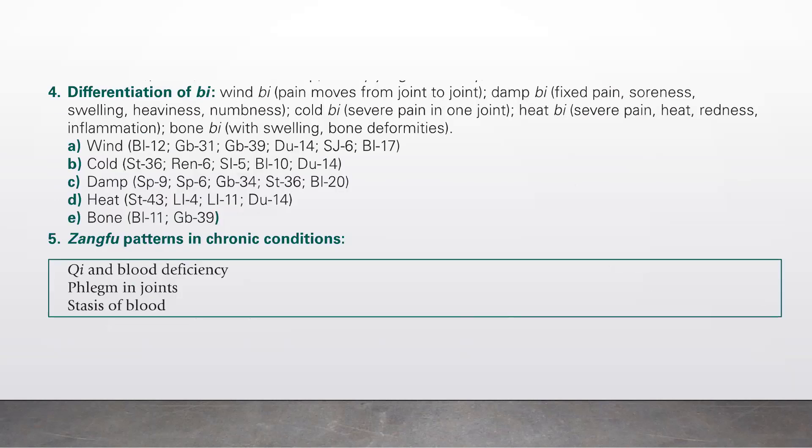Number four, differentiation of Bi patterns: Wind Bi — pain moves from joint to joint. Damp Bi — fixed pain, soreness, swelling, heaviness, numbness. Cold Bi — severe pain in one joint. Heat Bi — severe pain, heat, redness, inflammation. Bone Bi — with swelling and bone deformities.